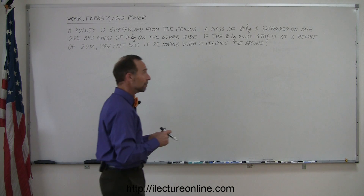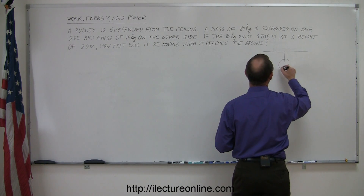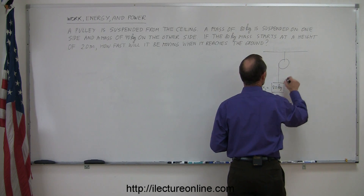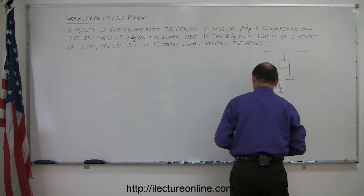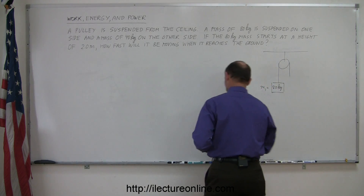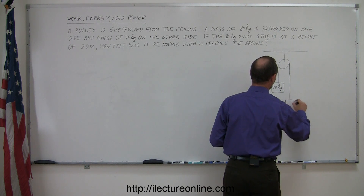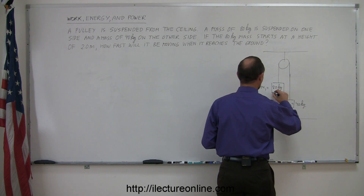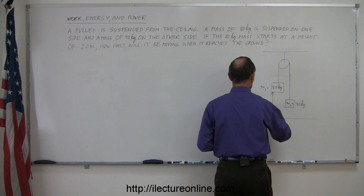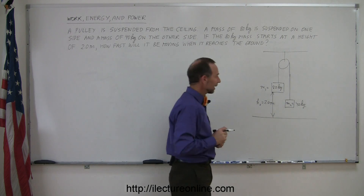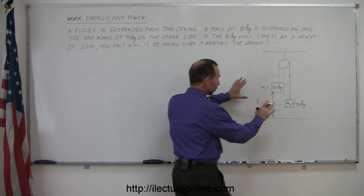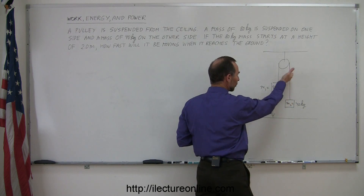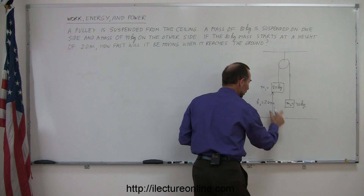Let's draw a diagram of what that looks like. Here's a ceiling, here's a pulley, and we suspend mass 1 equal to 80 kilograms on one side, and on the other side mass 2 equal to 40 kilograms. The floor is over here, and the initial height h-initial is equal to 2 meters. You hold things in place, then let go — the 80 kilogram mass starts accelerating downward, the 40 kilogram mass accelerates upward. How fast will the 80 kilogram mass be moving when it hits the ground?